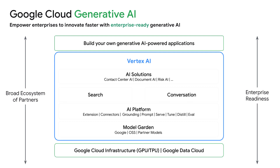One step up, and we'll come back to this in a lot more detail, is our Model Garden, where we offer open-source, Google first-party, and third-party models. This is the starting point for your AI journeys. It contains a curated set of many of the models we use for solutions up the stack as well.